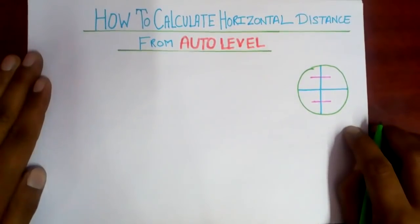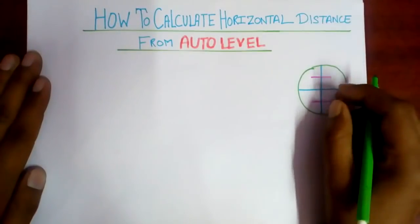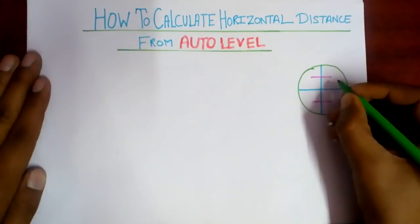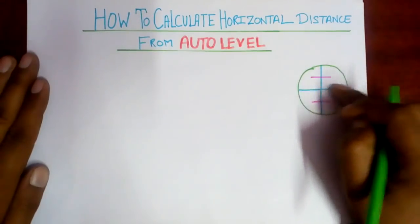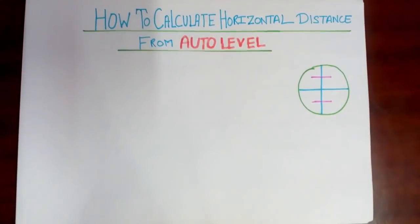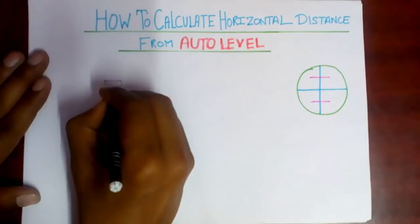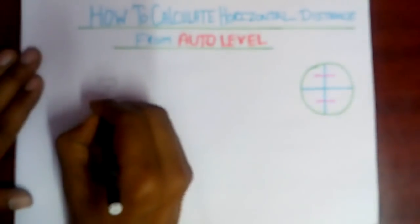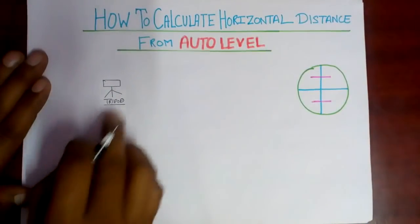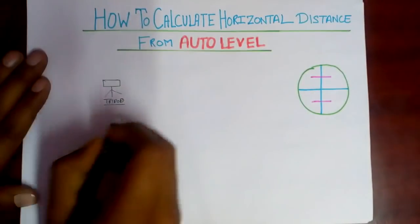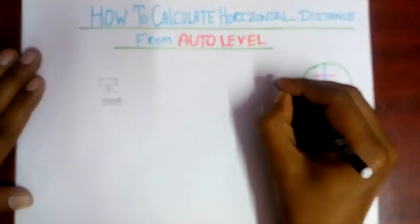When you take the reading from the staff, you see the cross here like this — this is your stadia and this is your cross hair. If you want to take a reading, this is your staff, which is mounted on a tripod.